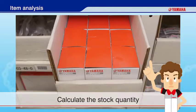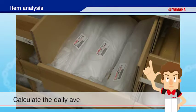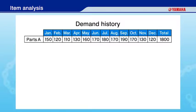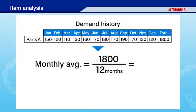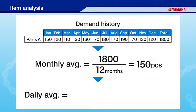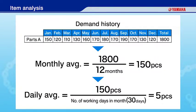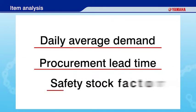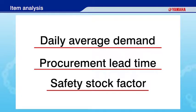Next, we'll calculate the necessary quantity. First, calculate the daily average demand for each item. For example, if you receive orders for a total of 1,800 pieces in a year, your monthly average would be 150 pieces. With 30 working days in a month, the daily average demand becomes 5 pieces. After calculating the daily average demand, use this figure to calculate the necessary stock quantity. The necessary stock quantity is calculated from the daily average demand, the procurement lead time, and the safety stock factor.